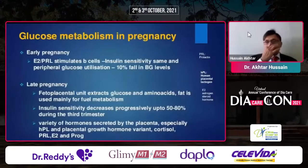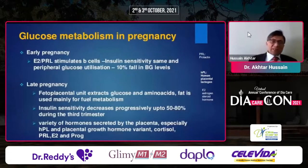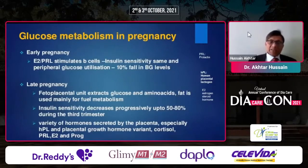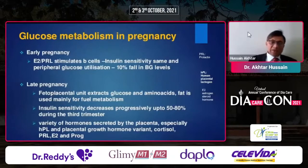In early pregnancy, prolactin stimulates beta cell insulin sensitivity, with about a 10% fall in blood glucose levels. In late pregnancy, fetal-placental extraction of glucose means insulin sensitivity decreases progressively by 50 to 80%. A variety of hormones secreted by the placenta — especially HPL, placental growth hormone, and cortisol — contribute to this effect.